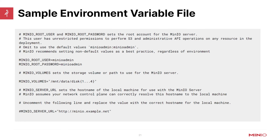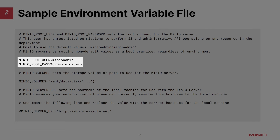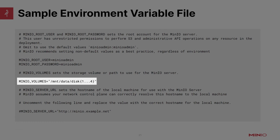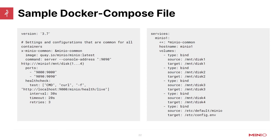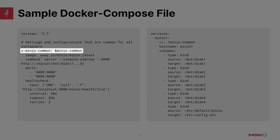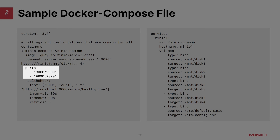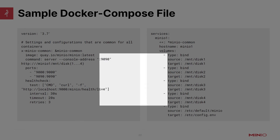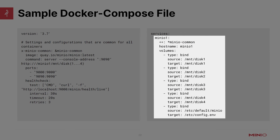Here's a sample of the environment variable file — links in the description. You can see we are defining the root user and password, and using that expansion notation next to MINIO_VOLUMES: mount data disk with curly braces one through four. Here's a sample of the Docker Compose file. You can see the MinIO command mounting disks one through four, exposing ports 9000 and 9090 from the container to the host, and a health check. On the volumes side, we are mounting every single disk from the host system into the Docker container, as well as the configuration file.